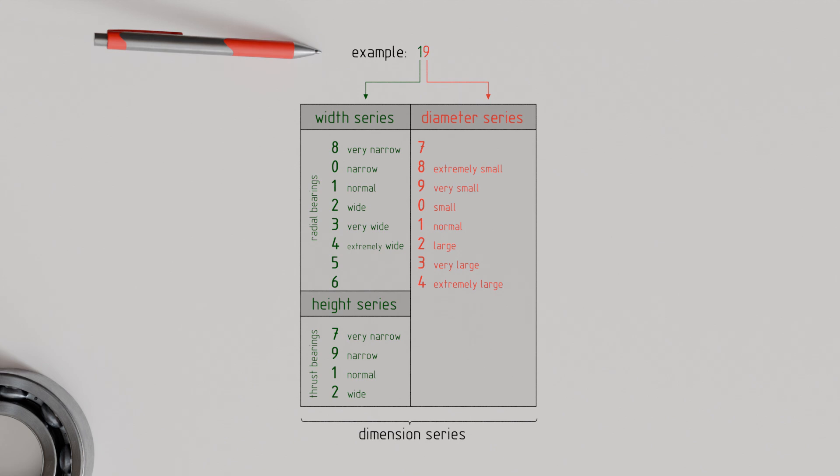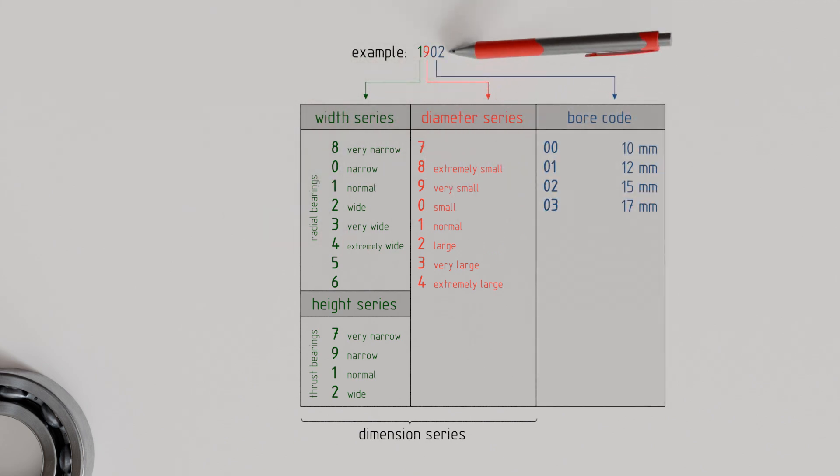such as whether it is small, large, narrow, or wide. However, no specific dimension is given yet. This is only determined by the specification of the bore diameter. Thus, the dimension series combined with the bore diameter clearly describes the bearing in its main dimensions.